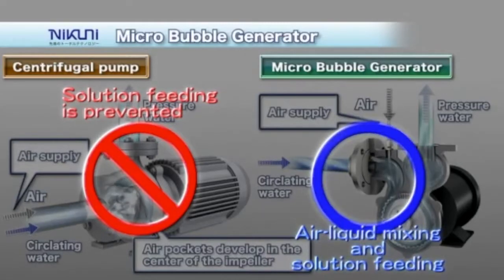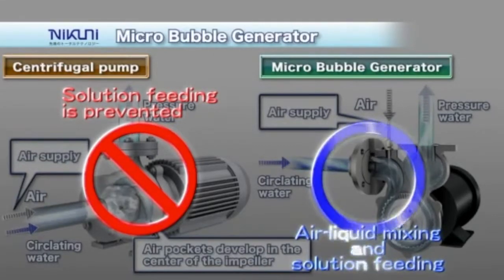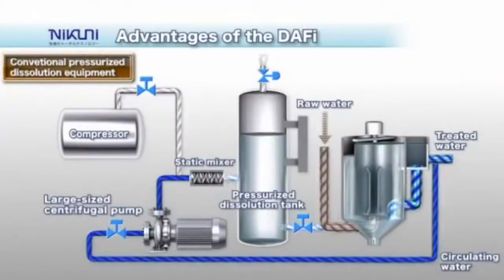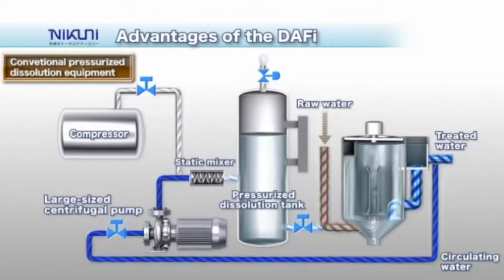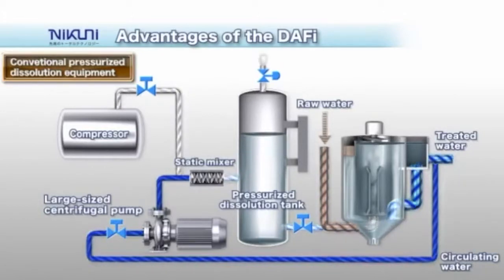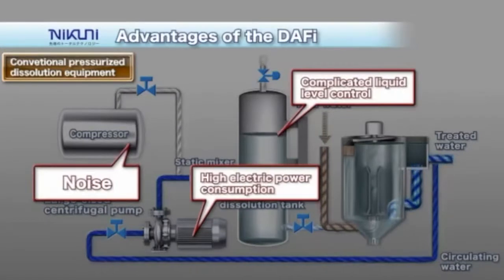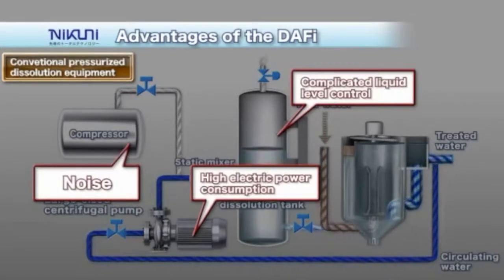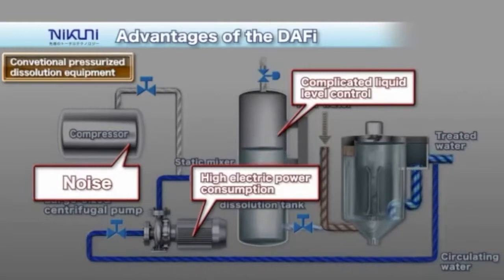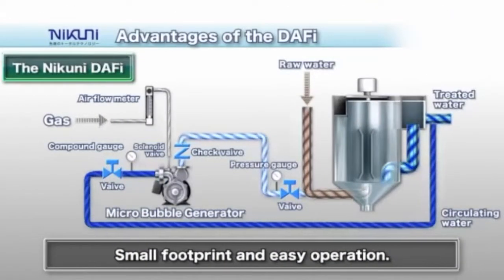Additional advantages of the KTM DAF pump include a simple and robust design and easy operation. Typical pressurized DAF systems require a large centrifugal pump and a pressurized dissolution tank, along with a noisy air compressor and static mixer. This arrangement uses a large amount of power and makes it difficult to maintain liquid level control in the pressurized dissolution tank.